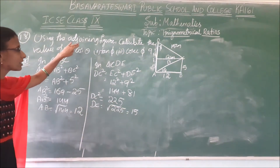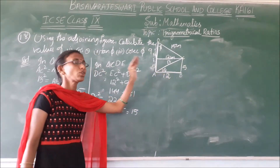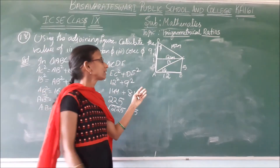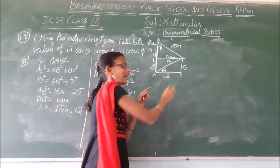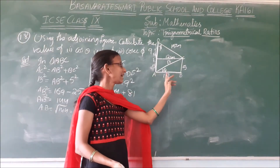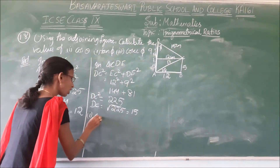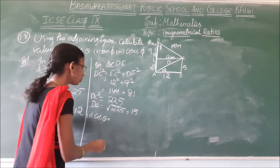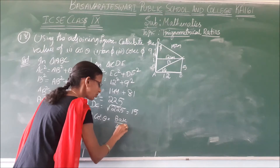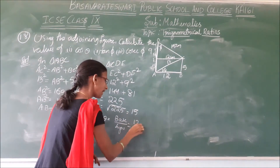Now we know all the sides. We have to find first cos theta. Theta is the angle here. Cos means base by hypotenuse. The adjacent side is the base and the opposite side is perpendicular. So cos theta equals base by hypotenuse, which is 12 by 13.